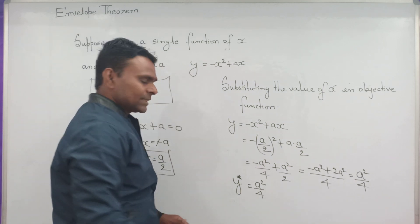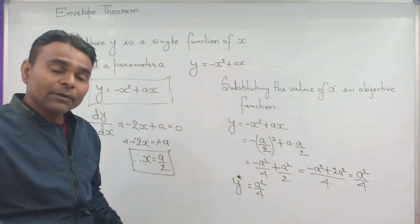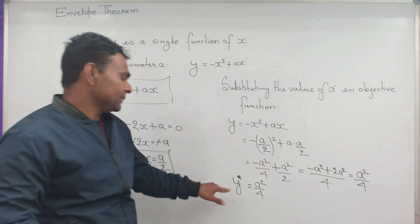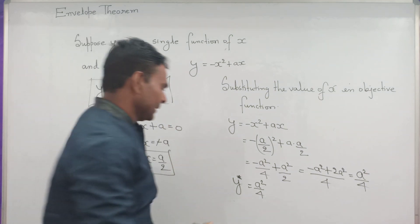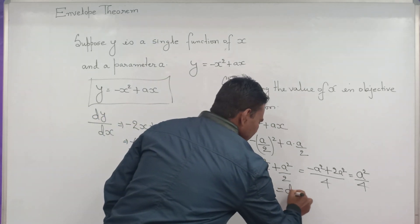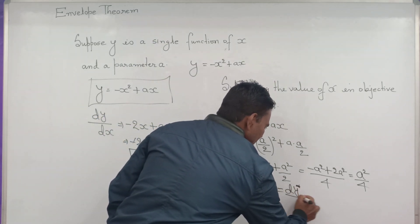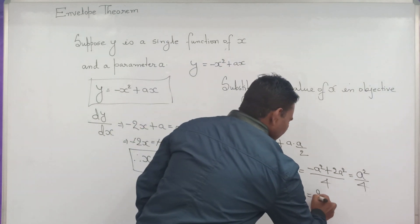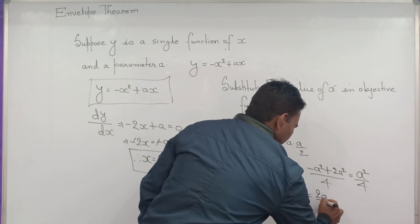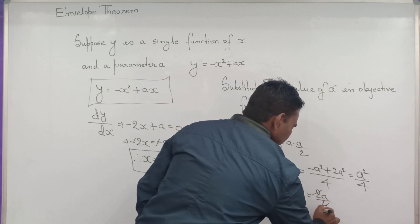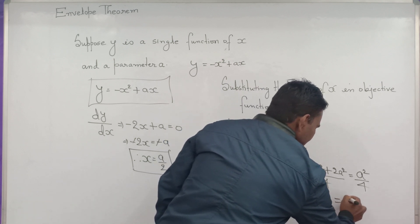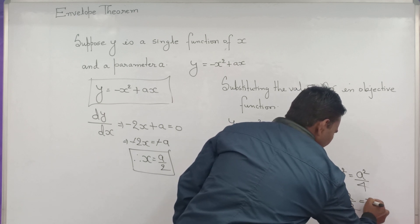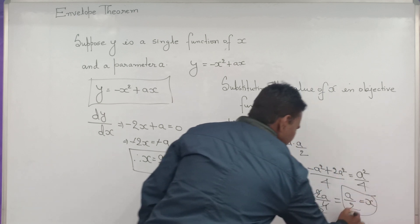Now this calculation: the derivative of the maximum value of y, that is y star, with respect to parameter a — dy star by da equals 2a over 4, which simplifies to a over 2. This is equal to the value of x, which you can see here — confirming the envelope theorem.